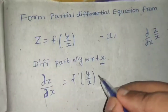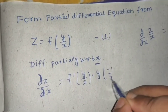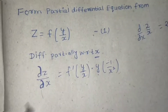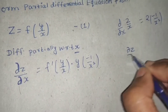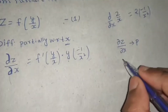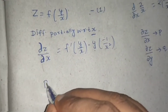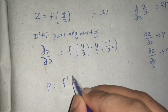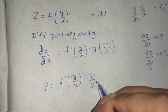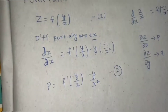y will go outside and the derivative of 1/x is -1/x². So del z / del x, which is p in the world of partial differential equations, equals f'(y/x) · (-y/x²). We can call this equation number two.